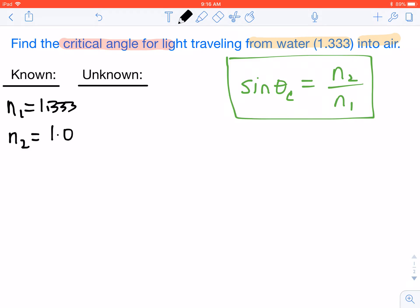What we want to find is theta C. That's our symbol for critical angle. You take a look to your right. In green, there's our equation. Sine of theta C equals N2 divided by N1.